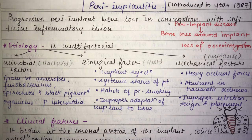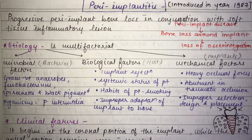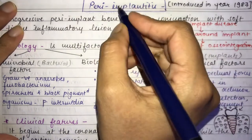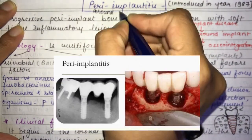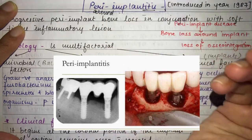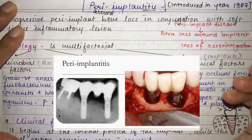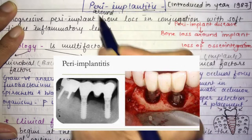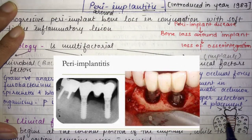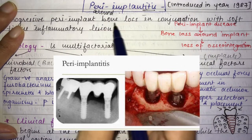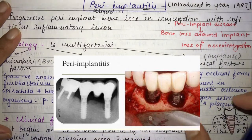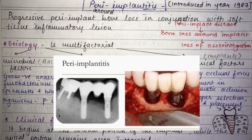The topic is peri-implantitis, a very important question commonly asked in exams from the topic of implants. 'Peri' means around, 'implant' refers to the implant, and 'itis' means inflammation. So peri-implantitis is inflammation present around the implant. It was introduced in the year 1987.